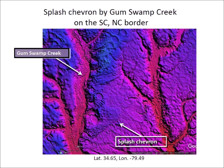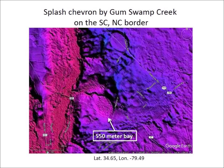This is another example of a splash chevron with a large sandy deposit. After the chevron formed, it was impacted by one or more ice projectiles. The chevron shows many pockmarks of small impacts and what appear to be several large overlapping impacts. The outline of a bay measuring 550 meters is still well defined. The tip of this chevron dune is in North Carolina, while the major part of the dune is in South Carolina.